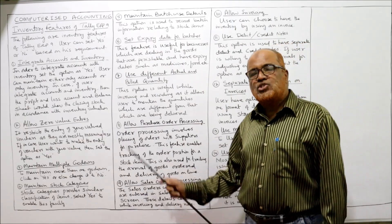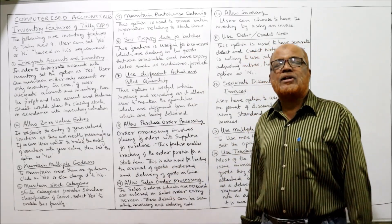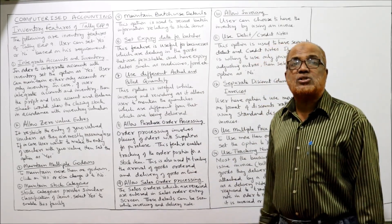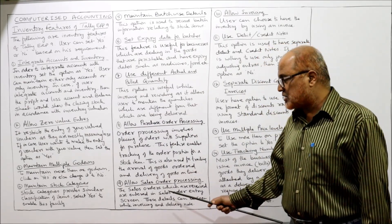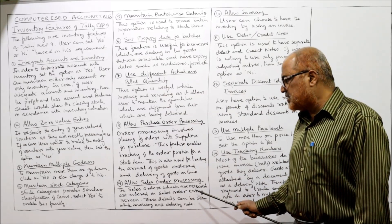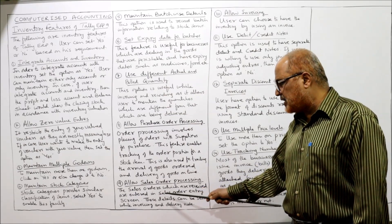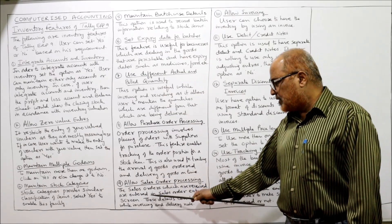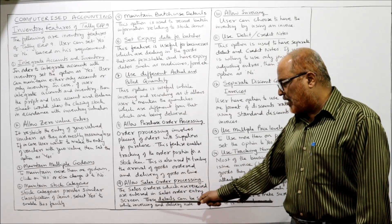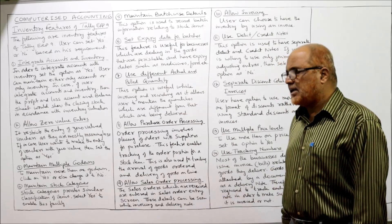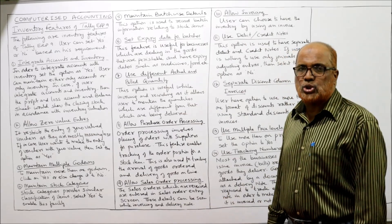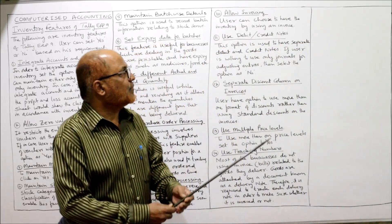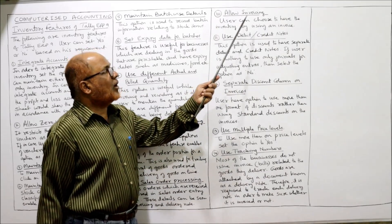The ninth feature is: allow sales order processing. Just like purchase order processing, there is an option for sales order processing. Sales orders which are received are entered in the sales order entry. These details can then be stored while invoicing and creating delivery notes.